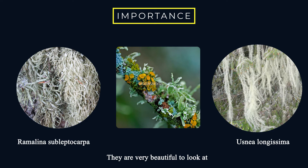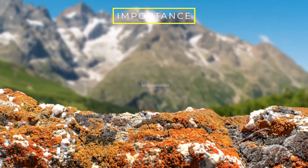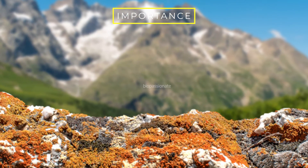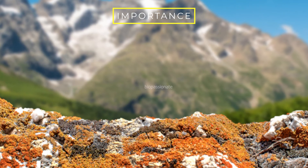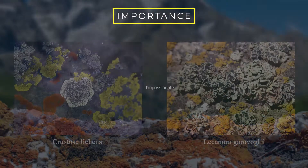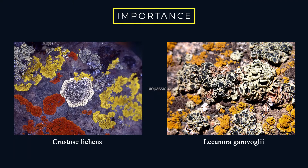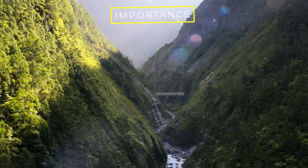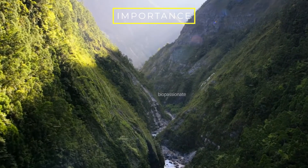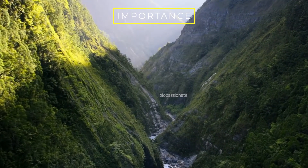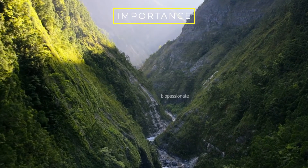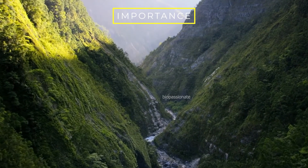How colorful would the rocks and cliffs be in the rocky mountains without the reds, yellows, and greens of the crustose lichens. Lichens also help in the survival of the alga even in harsh environments, since the fungus can protect its algae.